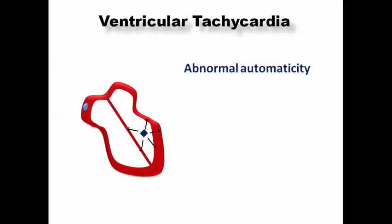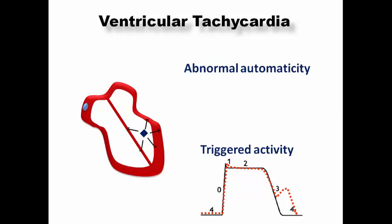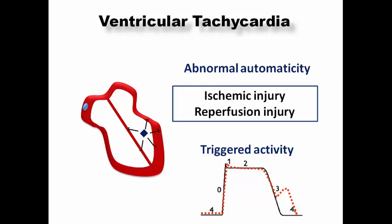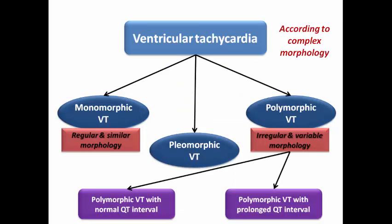Ventricular tachycardia in acute MI can occur by two mechanisms: an abnormally automatic focus inside the left or right ventricle, or delayed afterdepolarizations from abnormal calcium handling — a subtype of triggered activity. This can occur during the acute ischemic injury itself or after reperfusion by PCI or thrombolytics. VT is classified by morphology: monomorphic (regular, similar morphology), pleomorphic (more than one distinct morphology, minimal axis change), and polymorphic (continuous irregular change in morphology and axis).